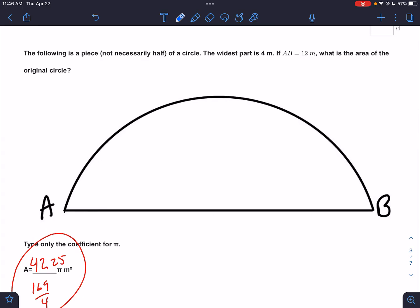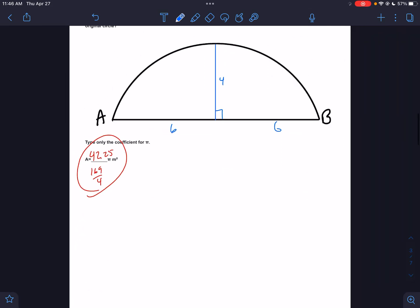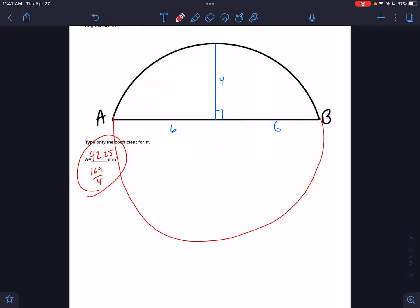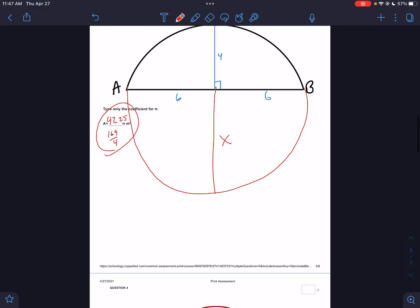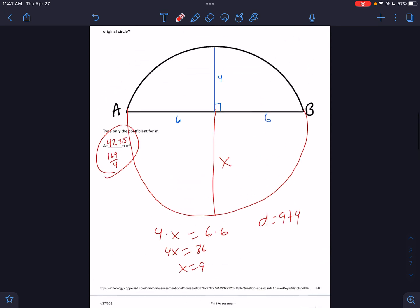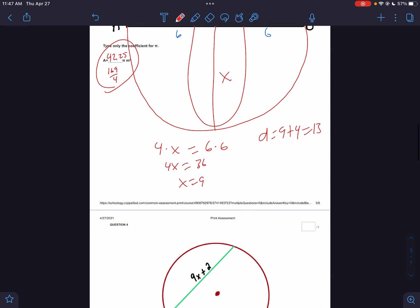On this one we have a piece of a circle—it's called a segment of a circle. They tell us that the widest section is 4 and that has to make a right angle. We measure heights at a right angle. This is going to cut into 6 and 6. The steps never change: we draw the rest of the circle and draw the rest of the diameter. Call the rest of the diameter x. So we do part times part: 4x = 36, x = 9.